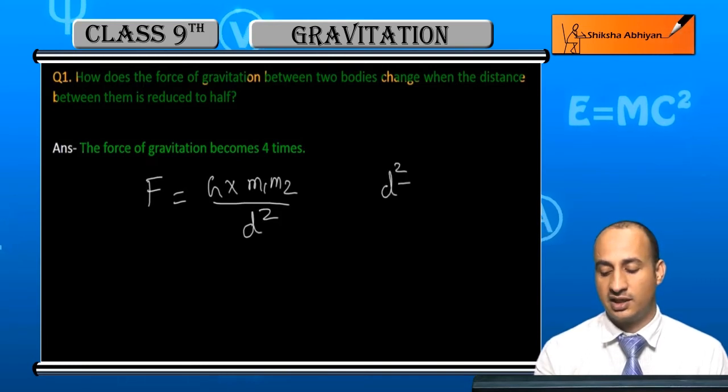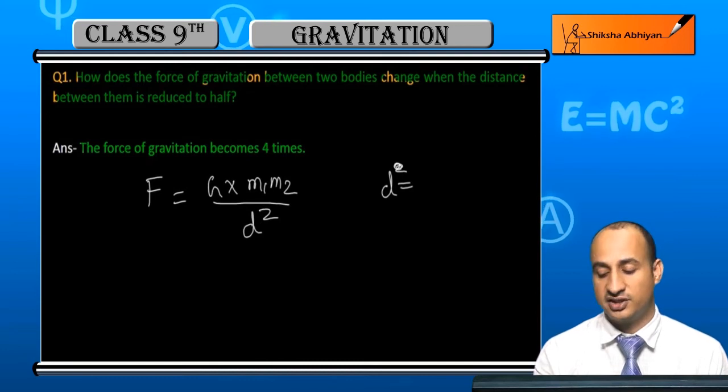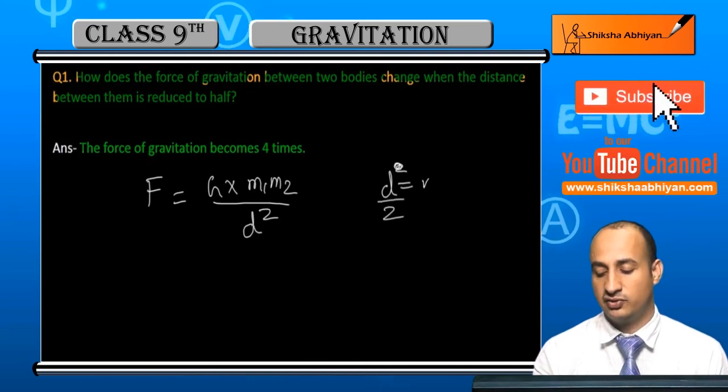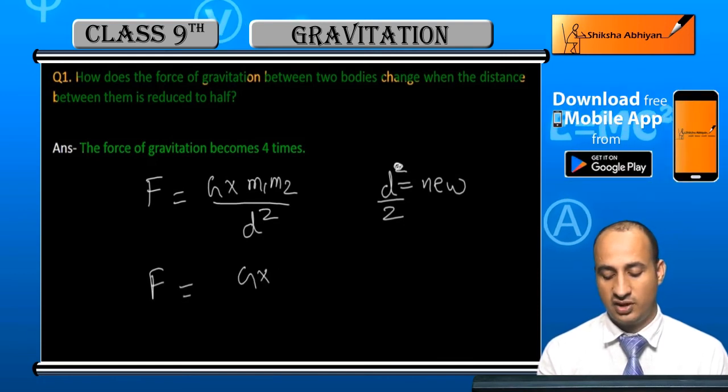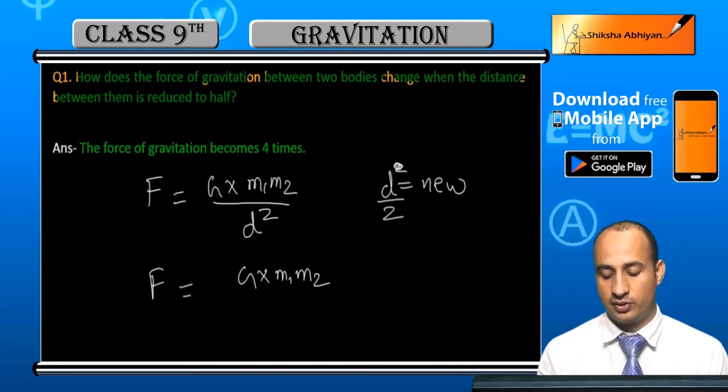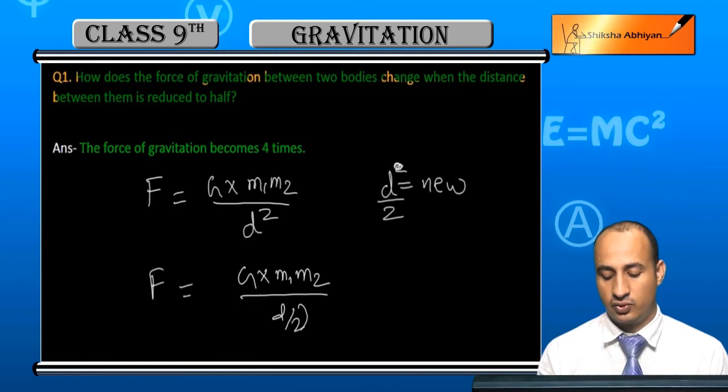D squared will be half, so in this case, the distance will be half, so the force will be G times M1 and M2 upon D by 2 whole square.